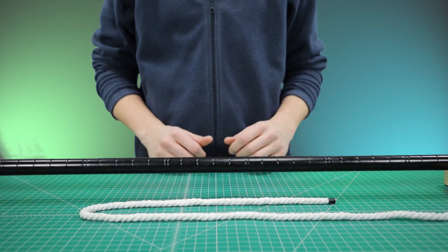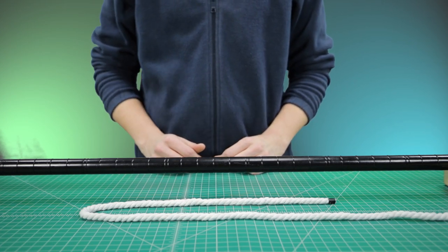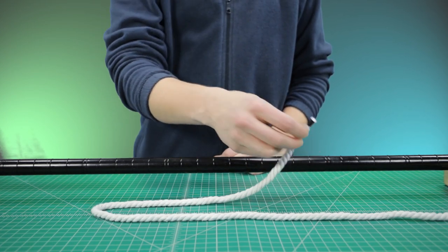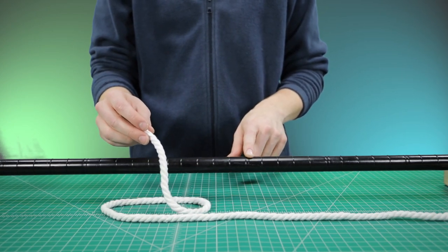There's a couple different methods for tying the constrictor knot. The first one that we're going to go over is for when you have access to one rope end, but not access to the ends of the object you're tying it around.